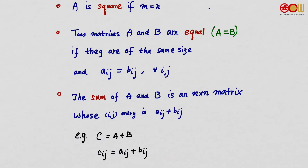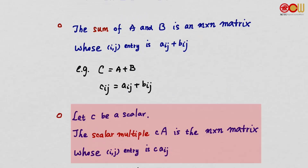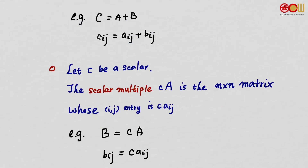For example, if C = A + B, the sum of A and B, then c_ij = a_ij + b_ij. Suppose c is a scalar. The scalar multiple cA is the m by n matrix whose (i,j) entry is c times a_ij. For example, if B = cA, then b_ij = c times a_ij.